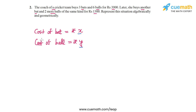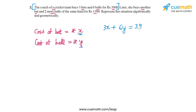Now let's read the problem statement carefully and convert the given information into linear equations in x and y. The coach buys three bats and six balls for 3,900 rupees. Three bats will cost 3x rupees and six balls will cost 6y rupees. The sum of these costs should equal 3,900, so we get our first equation: 3x + 6y = 3900.